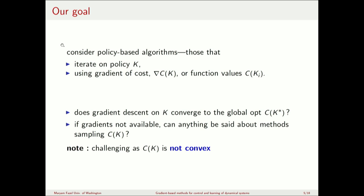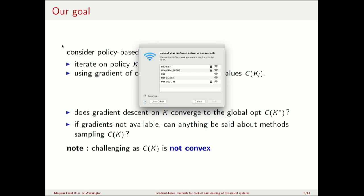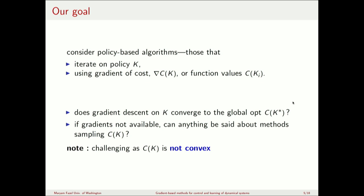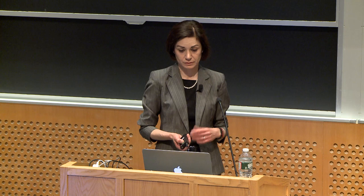The first question is: if I do gradient descent on the cost induced by the LQR problem, does it converge? Does it converge to the well-known optimal controller K-star? The second question is: what if gradients are not available — can anything be said if we sample the function value? The main challenge is that the cost as a function of K is not convex, and therefore doing gradient descent on a non-convex function can be problematic and generally does not have guarantees.